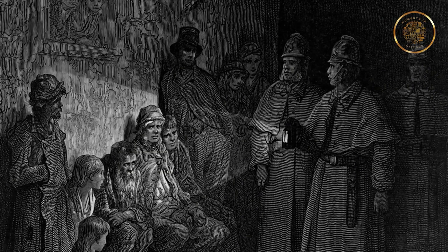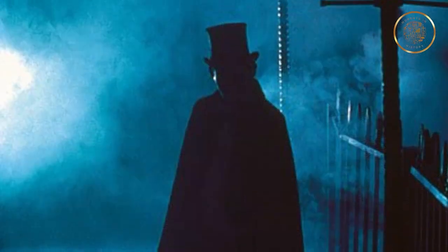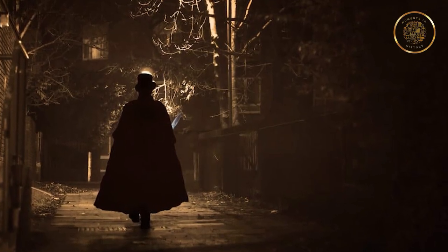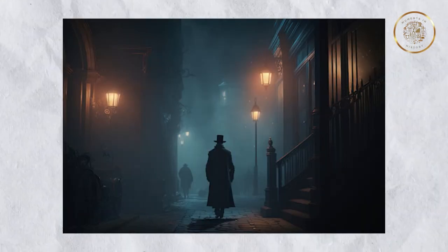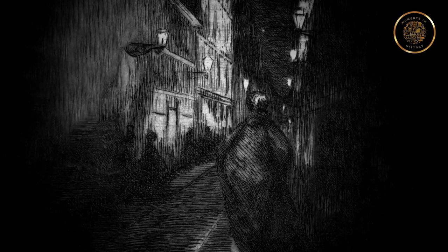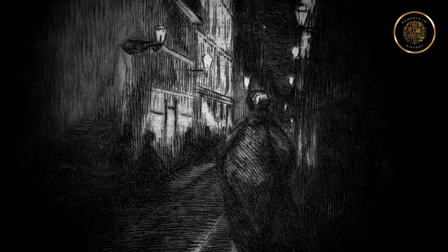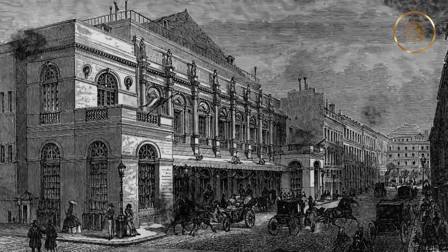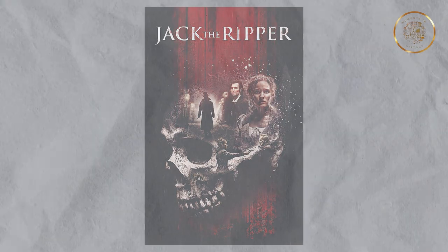The frustration and sense of powerlessness among the investigators grew with each passing murder. As the murders continued, a wave of theories and rumors swept through the city. The Ripper's identity remained a mystery, with theories ranging from a deep-seated hatred towards women to suggestions of ritualistic or even medical motivations. The lack of a clear motive only added to the mystery. The impact of Jack the Ripper's crimes reverberated far beyond Whitechapel, leaving an indelible mark on popular culture and inspiring countless books, films, and theories.